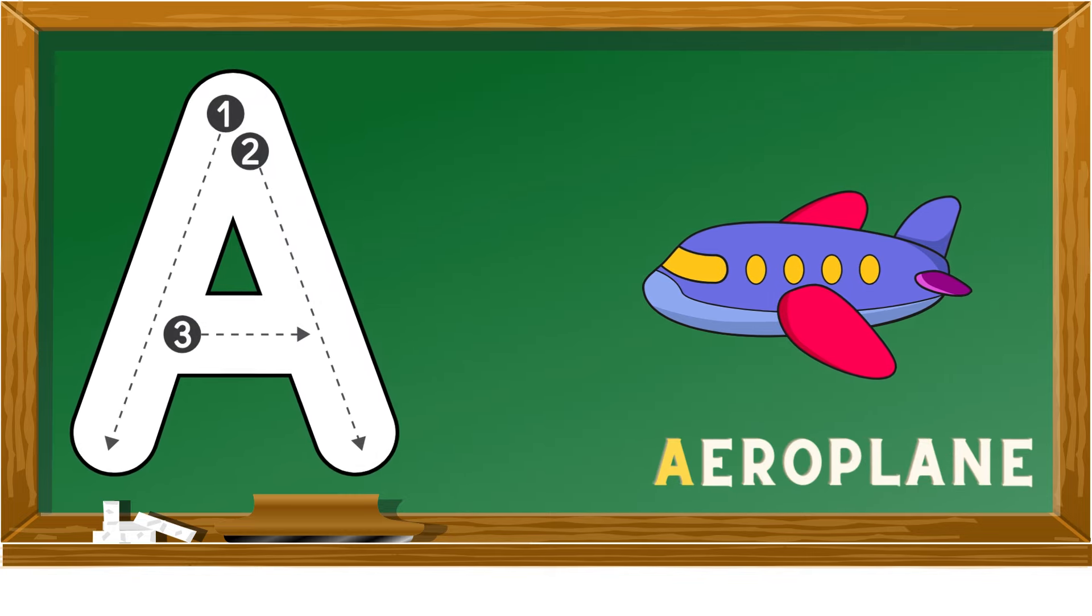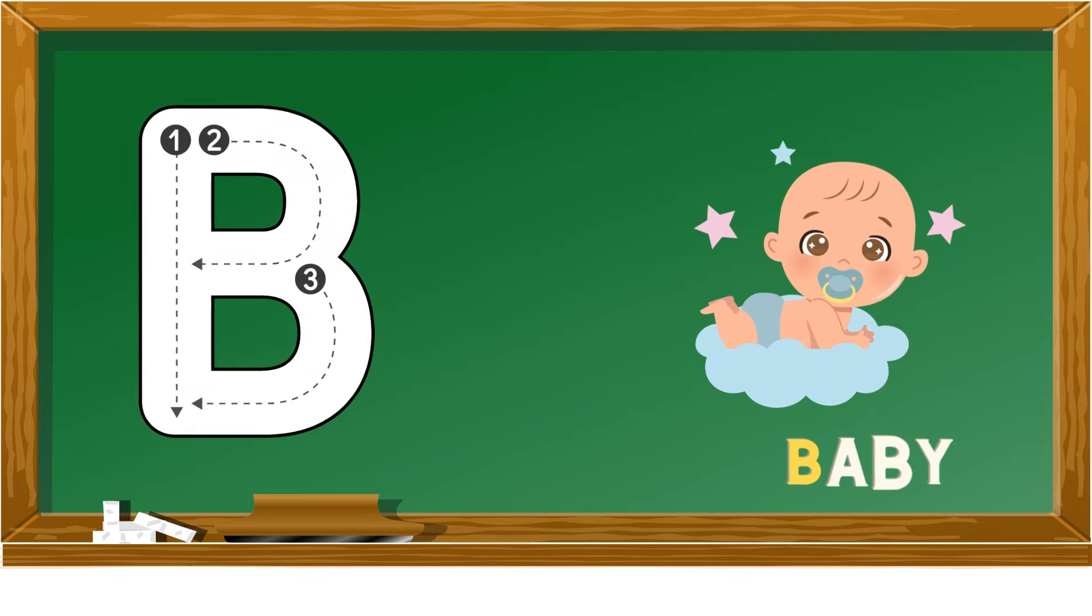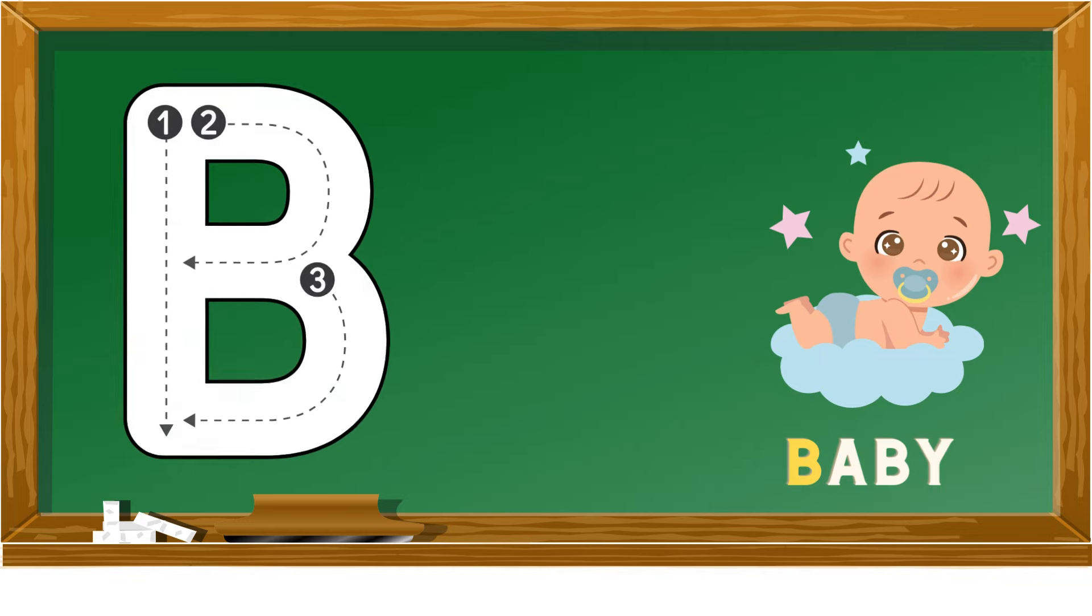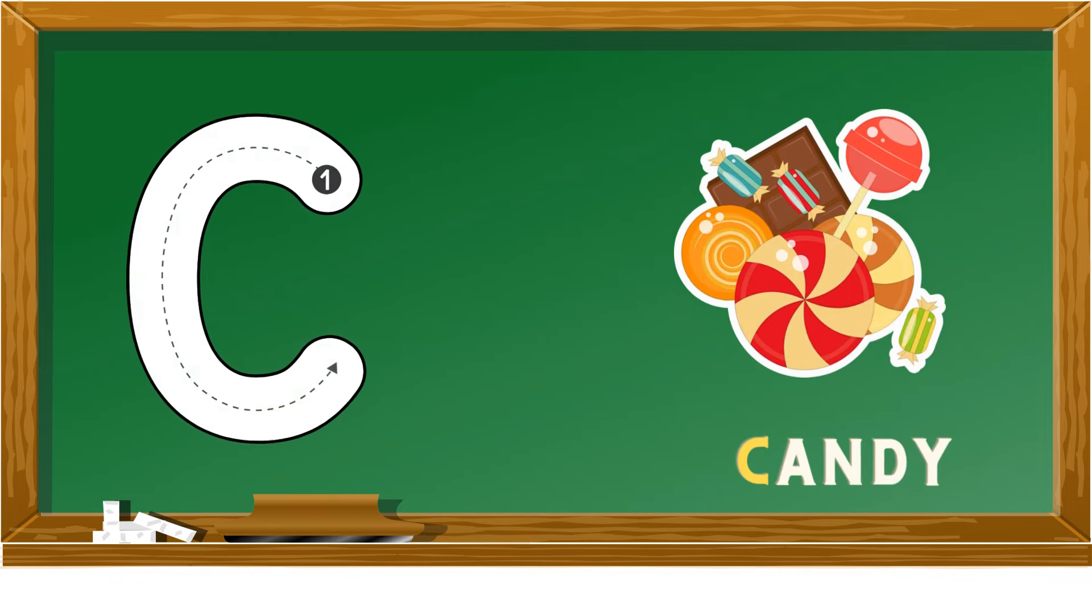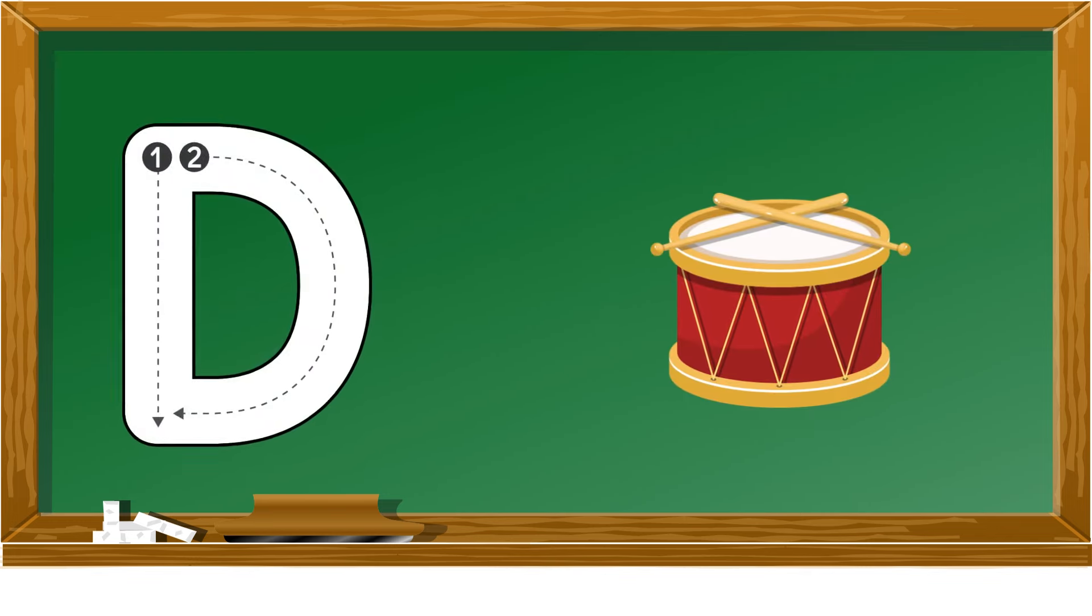A is for aeroplane, B is for baby, C is for candy, D is for drum.